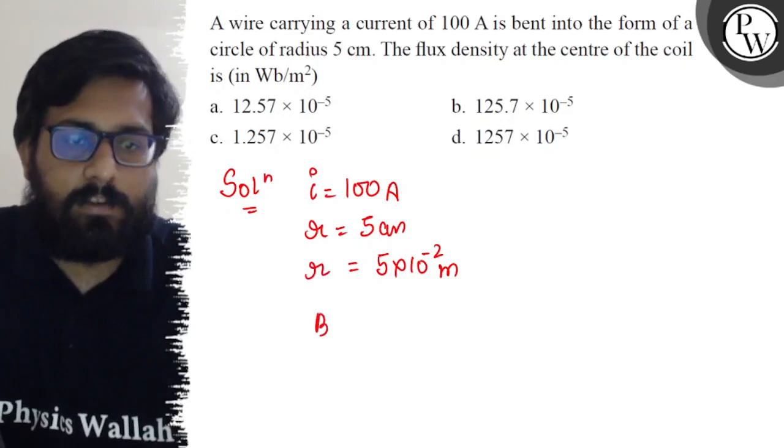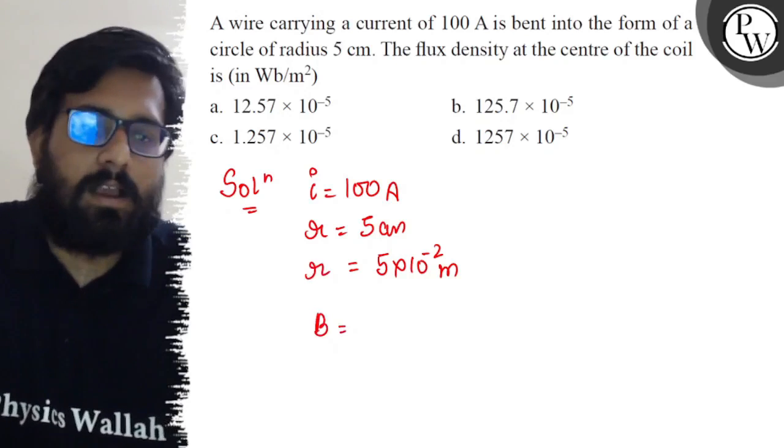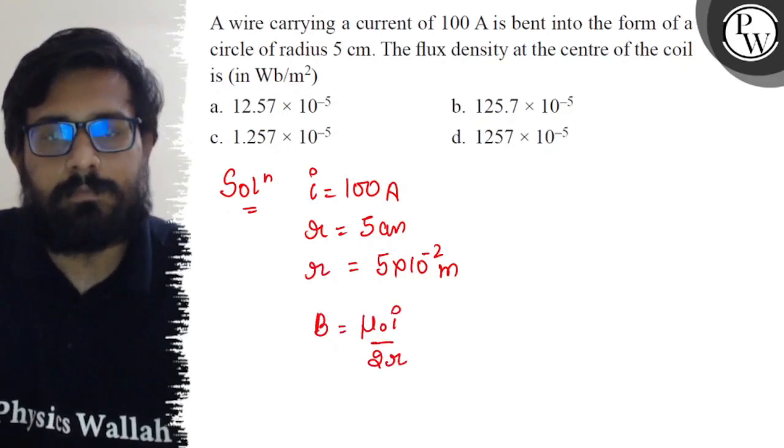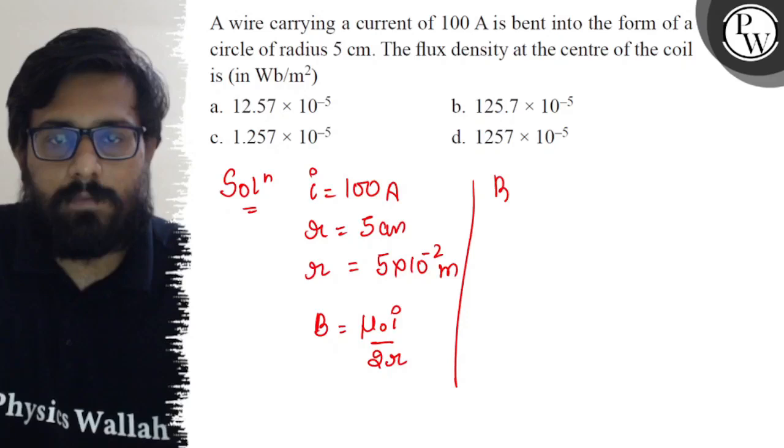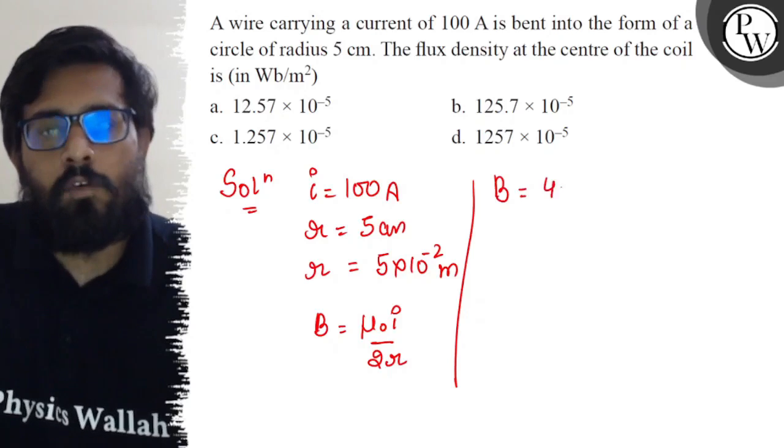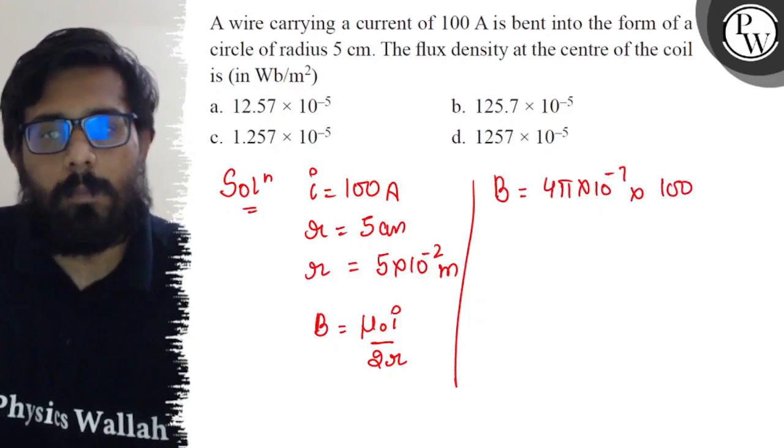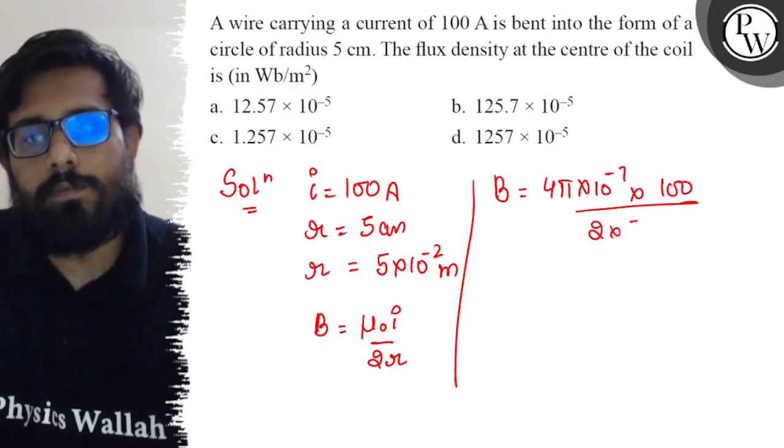We have to find the value of B. The relation is B = μ₀i/(2r). So from here the value of B comes out to be: μ₀ is 4π × 10⁻⁷, times current is 100, divided by 2 times 5 × 10⁻².